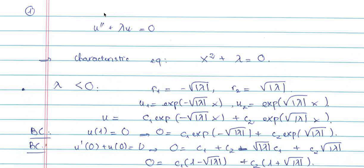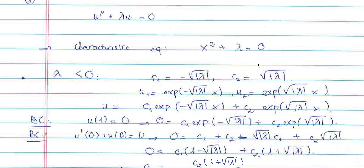In problem number one, you need to solve this eigenvalue problem. This eigenvalue problem has a characteristic equation of the type x squared plus lambda equals zero. As we discussed in class, we have three cases to consider: lambda is smaller than zero, lambda is zero, and lambda is greater than zero.